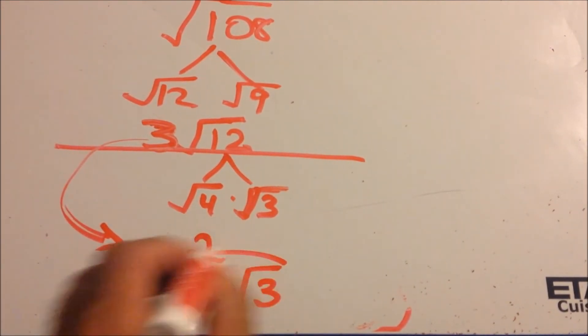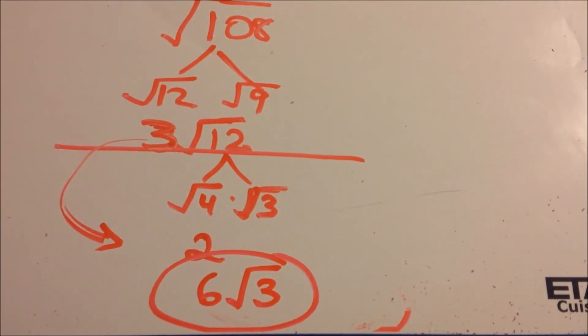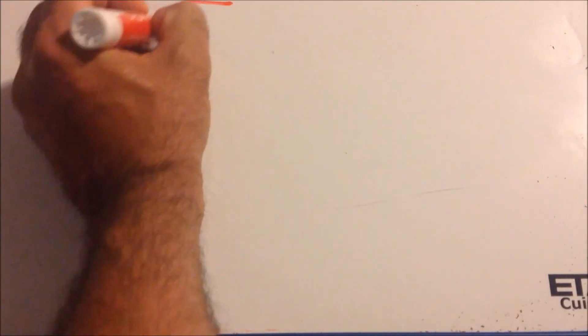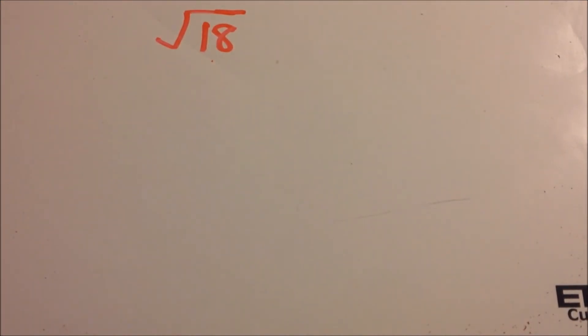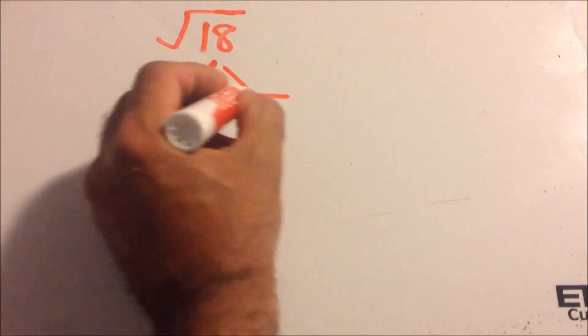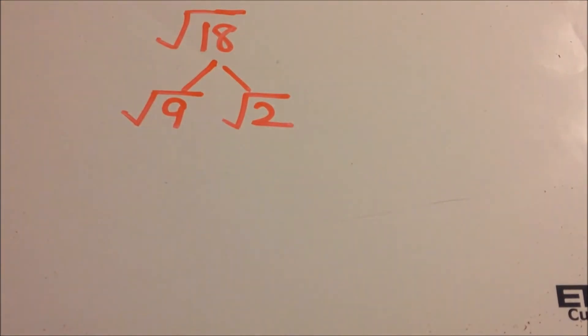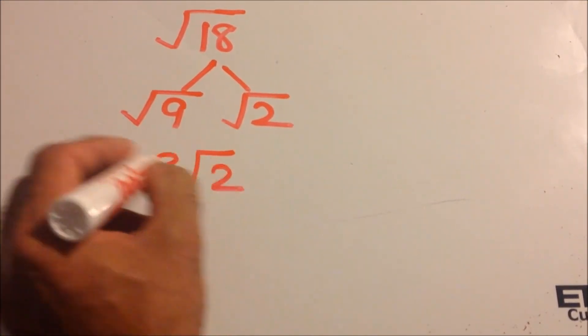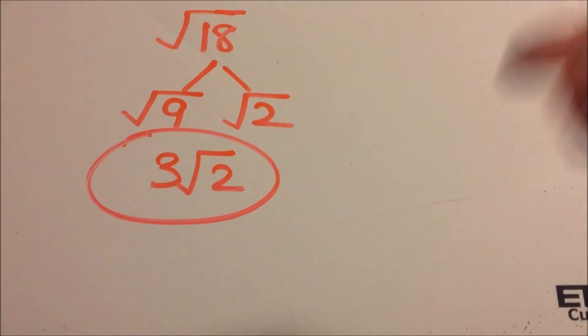Let's do one more. What if we had the square root of 18? We have the square root of 9 times the square root of 2. The square root of 9 is 3, and there's our answer: 3 times the square root of 2. That's how we can simplify square roots.